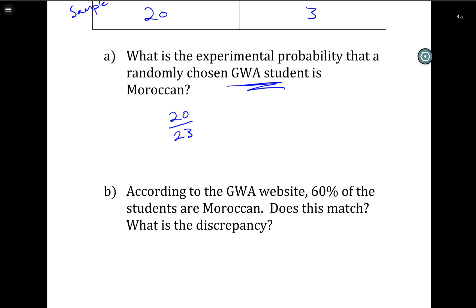Now, according to the GWA website, 60% of the students are Moroccan. Does this match? So let's actually calculate what percent this is. 20 divided by 23 is 87%. This is higher than the website claims. How does that make sense? Well, remember, this was just an experimental probability. This was based on a sample. This is not looking at the school as a whole. So you have to be careful because even though we can use samples to educate us about the whole, obviously we might get some inaccuracies. And if you go into AP statistics, you'll be talking about this sort of thing way more in depth, and we'll start talking about it a little bit more in next chapter as well.